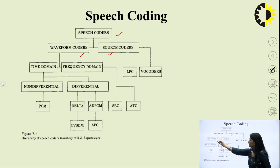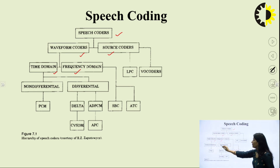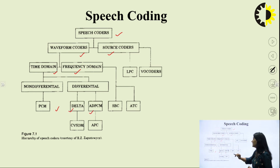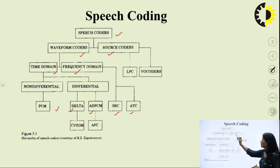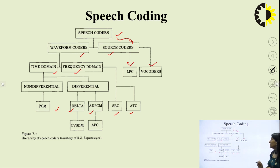Waveform coders can further be classified as time domain and frequency domain. These we have already studied in sixth semester — PCM, Delta PCM, ADPCM, SBC, ADC. We will talk about source coders. Source coders can further be classified as LPC and vocoder. We will discuss the vocoder in this video. LPC is linear predictive coding.